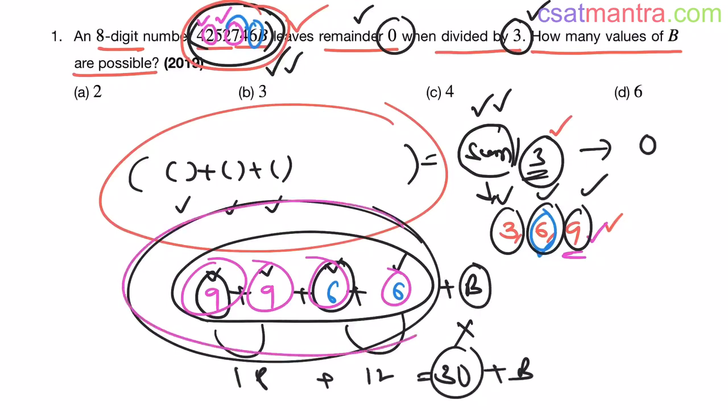Now you are left with B. Now see these sums are divisible by 3. Individually they are divisible by 3. Their sum is also divisible by 3. Now for this number to be divisible by 3, we are left with this digit B. This B should be divisible by 3. Now what are the possibilities of B?